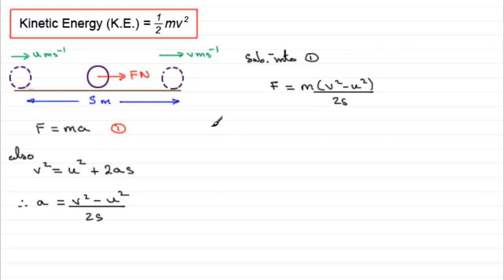Now do you remember that work done by a force f is going to equal that force multiplied by the distance it moves its point of application in the direction of the force. So it would be f times s. Now we know what f is from up here, so that's going to be m times v squared minus u squared all over 2s, multiplied by this s. Now the s's cancel.